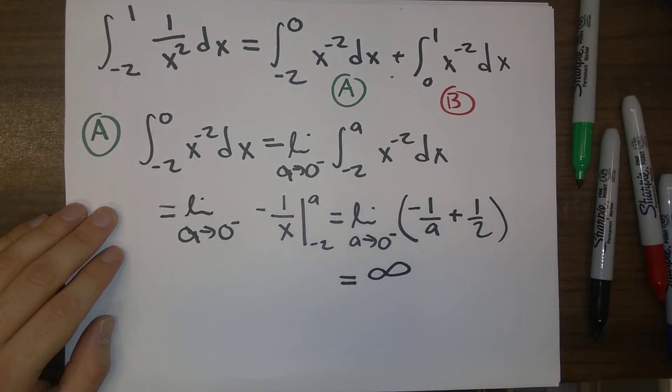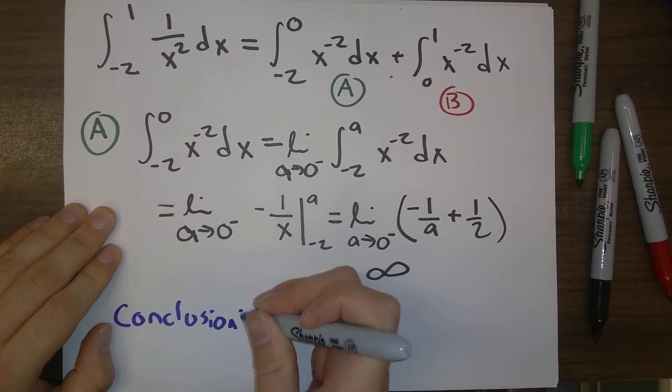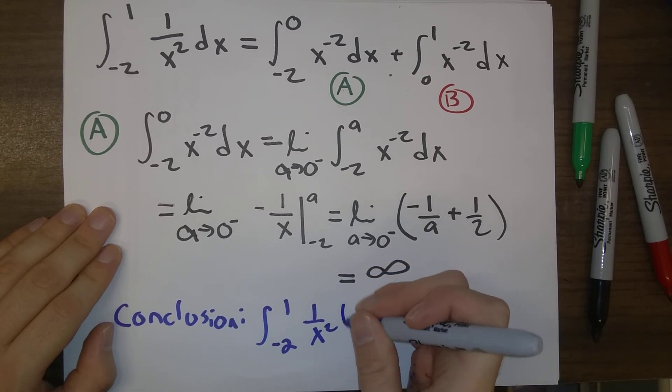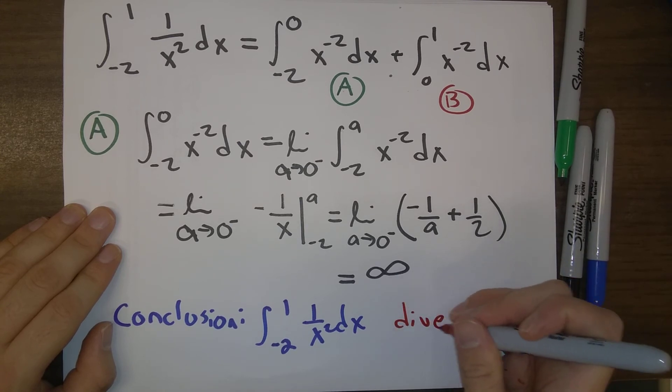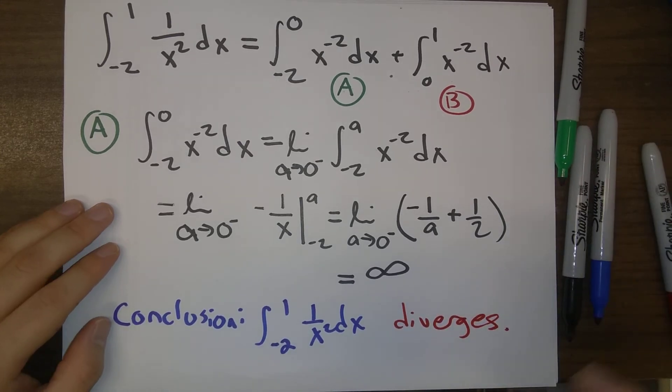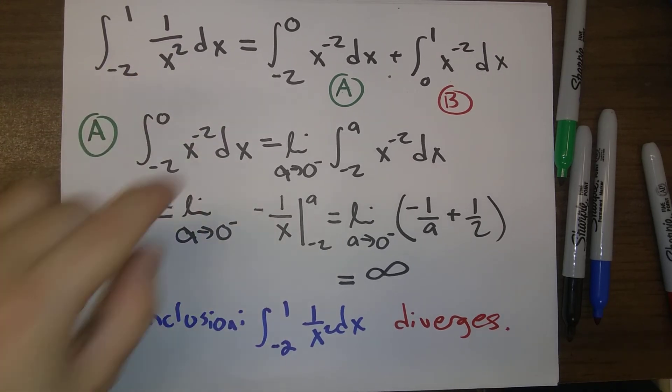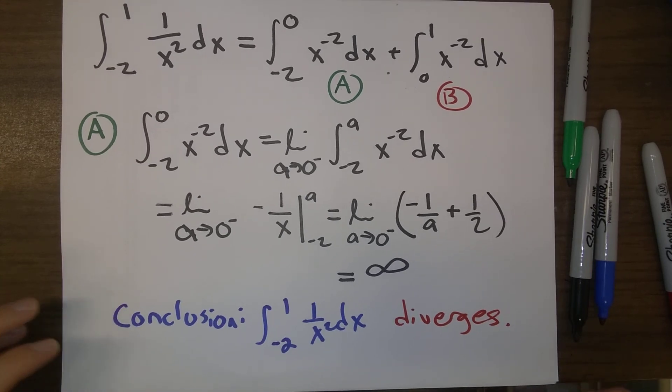And so our conclusion is that our overall limit from minus 2 to 1 of 1 over x squared dx, we can conclude that this diverges. So in order for this integral to converge, both of these would have to converge. As soon as we see that one of them diverges, we are done.